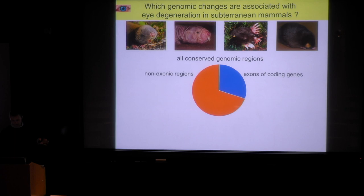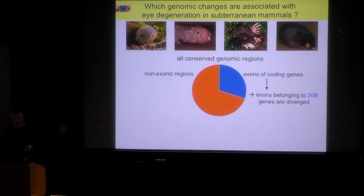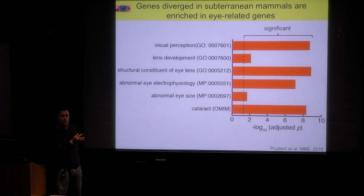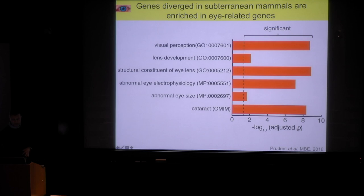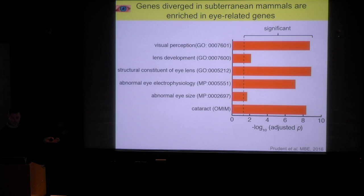The method considers all conserved regions in the genome, which largely fall into two classes. The first class is exons of coding genes. We find significant sequence divergence in subterranean species in exons belonging to a total of 208 genes. These 208 genes are highly enriched for eye-related genes, as shown by enrichments for GO terms such as visual perception, lens development, and structural lens components including crystallin genes. We also find enrichments for genes that give abnormal eye phenotypes in mouse knockouts, and genes associated with human eye diseases like cataracts.